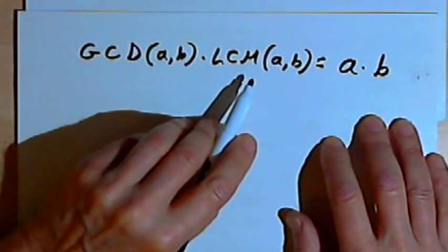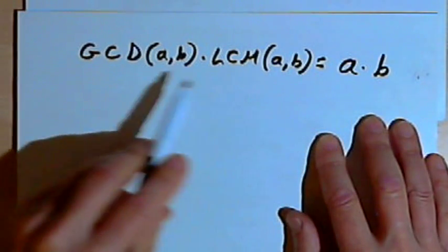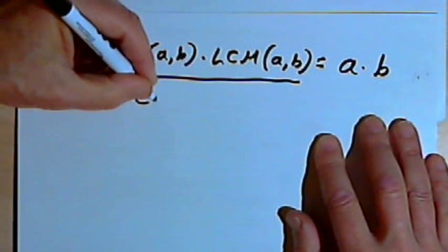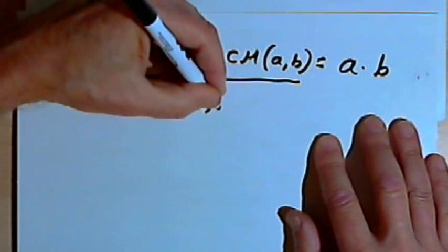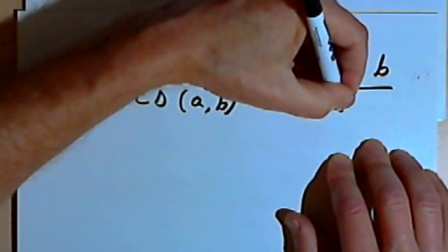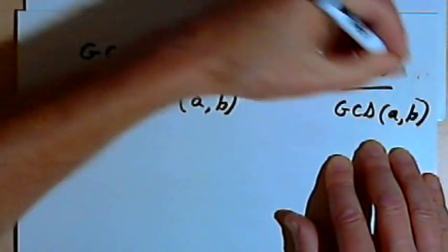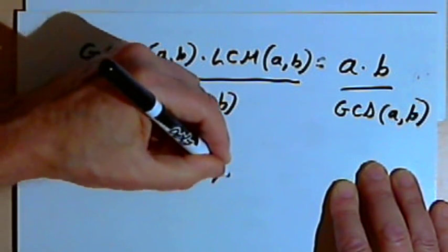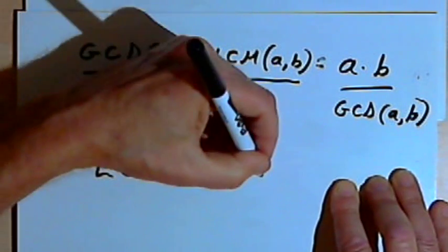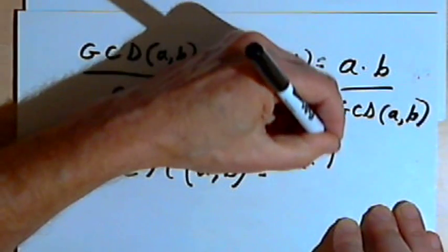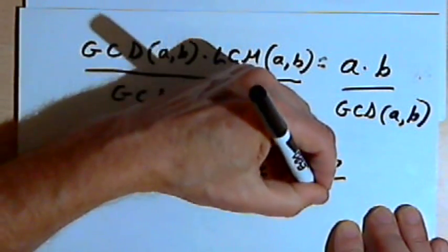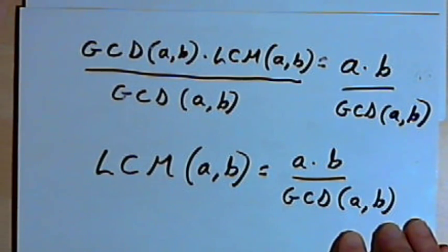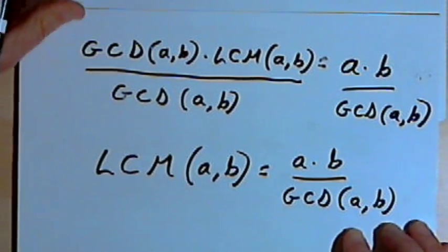Now if I want to find what the least common multiple is, I could divide both sides of this equation by the greatest common divisor. So if I divide both sides by the GCD, what I end up with is that the least common multiple of two numbers A and B is equal to A times B — the product of those two numbers — divided by the greatest common divisor of those two numbers. Once we get all these letters, it seems kind of abstract, so let's apply that to some real numbers.